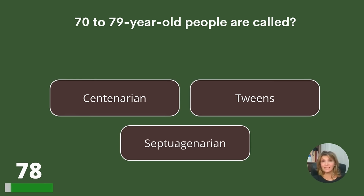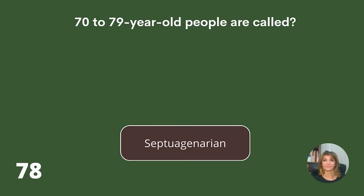70 to 79 year old people are called centenarian, tweens, or septuagenarian? Answer: Septuagenarian.